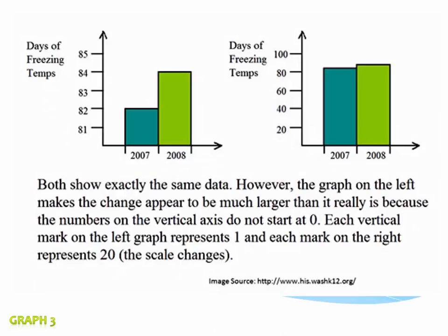Both graphs show the exact same data, but the graph on the left looks very different from the graph on the right with the exact same numbers. The difference is that the graph on the left starts at 81, while this one starts at zero. It just blows my mind whenever I look at these — people are telling me what to believe and it's really not that extreme.